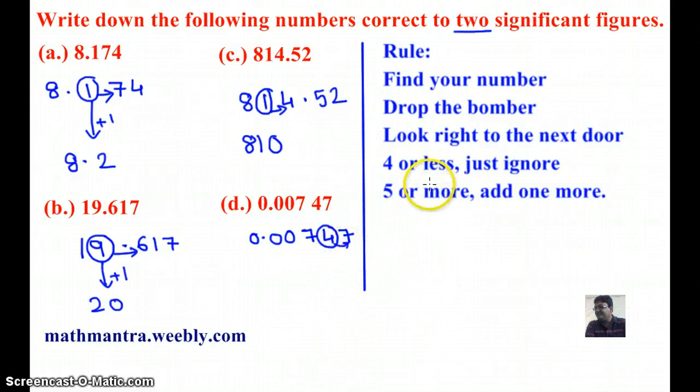And 0 is less than 4, so I'm just going to ignore and write 0.00747 as my answer.